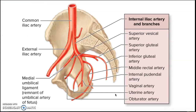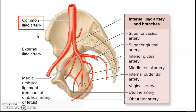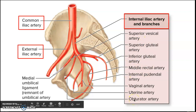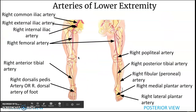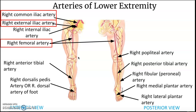Once again we have a common artery — the common iliac artery — and it branches into an internal and external iliac artery. Moving further into the lower extremity, we start with the right common iliac artery, which branches into the external and internal iliac arteries. We're going to follow the path of the external iliac artery, which turns into the right femoral artery.